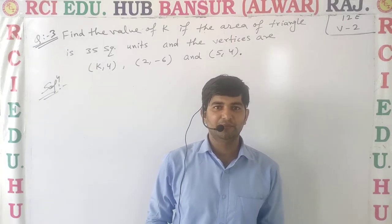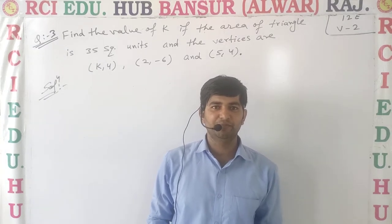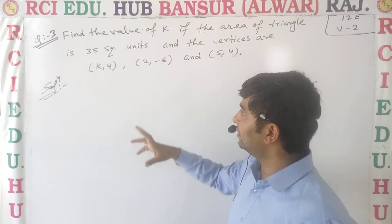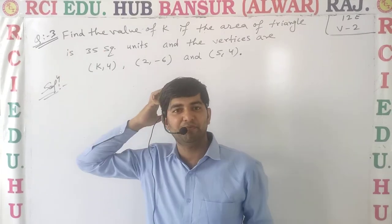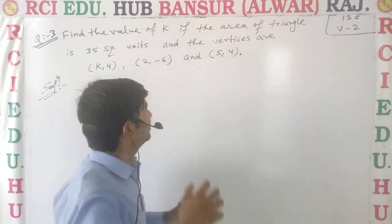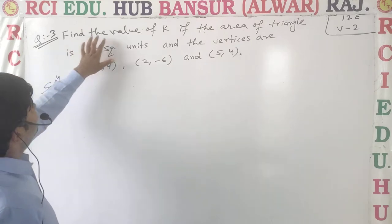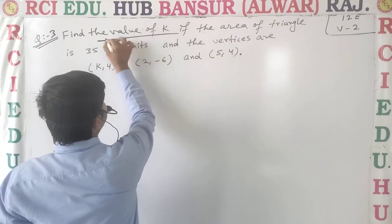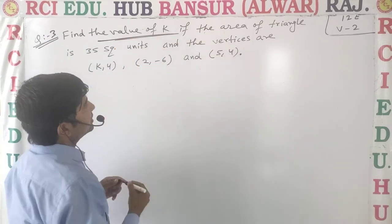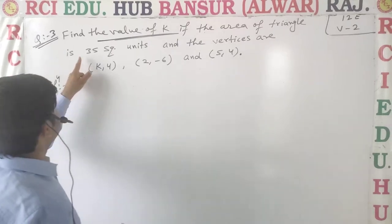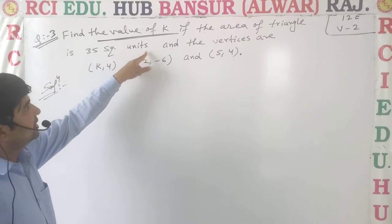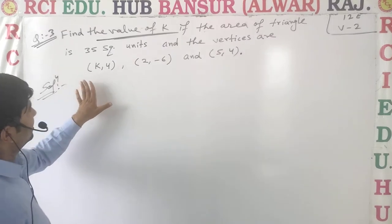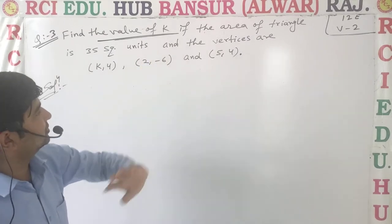Dear students, welcome to RCA Online Part Sala. Today we start question number 3 of exercise 5.2. The question is: find the value of K if the area of the triangle is 35 square units and the vertices of that triangle are given.